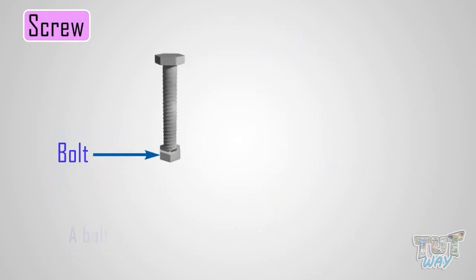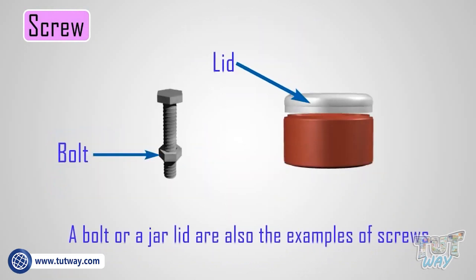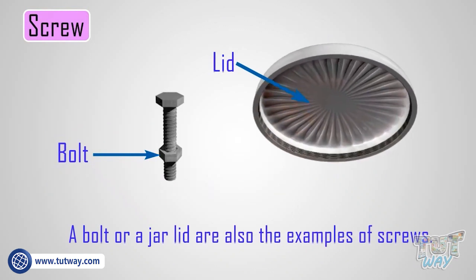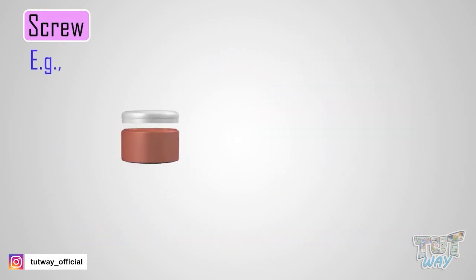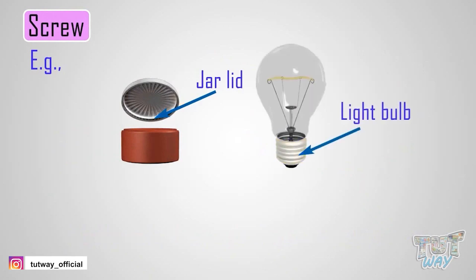A bolt and jar lid are also examples of screws. Screws can be found on jar lids and light bulbs.